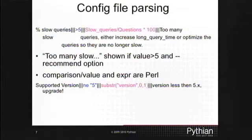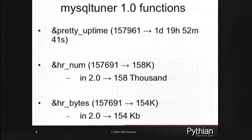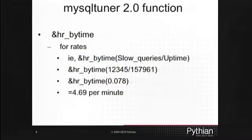MySQL Tuner 2.0 has kept the functions written in the first version. Pretty uptime is self-explanatory. HR means human readable. HR_num makes large numbers readable, and HR_bytes shows values in gigabytes, megabytes, etc. I added a function called HR_bytime.